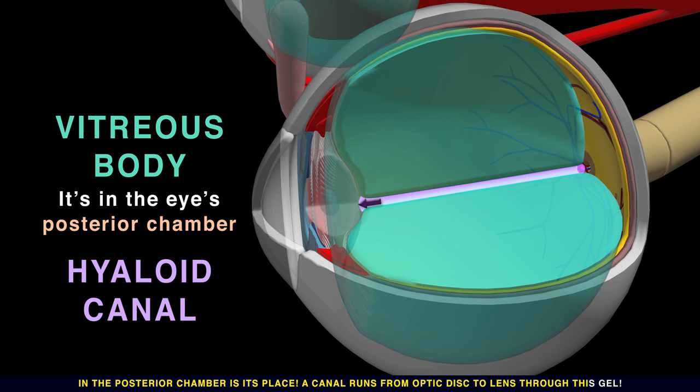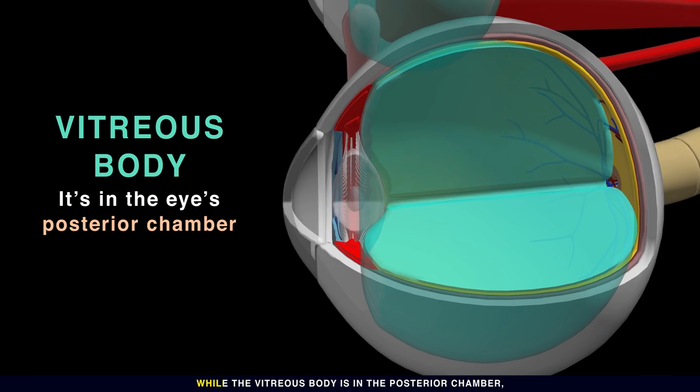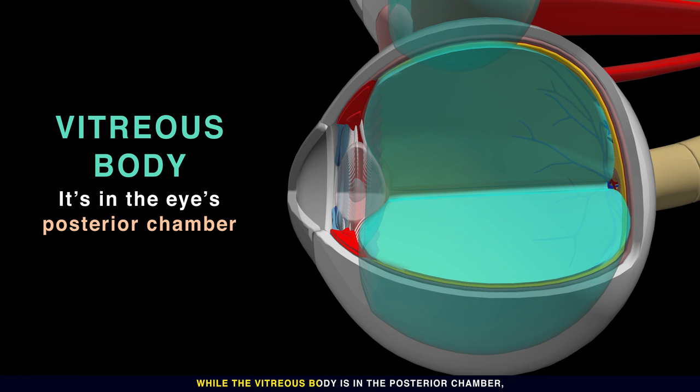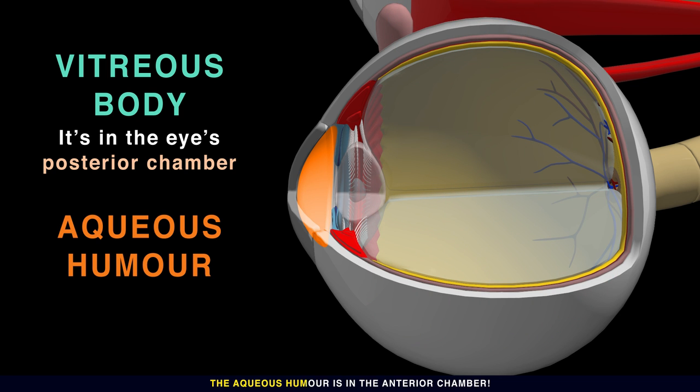A canal runs from optic to lens through this gel. It is a fetal remnant called the hyaloid canal. While the vitreous body is in the posterior chamber, the aqueous humor is in the anterior chamber.